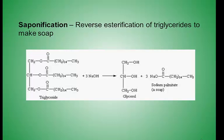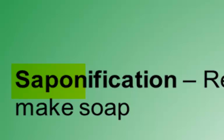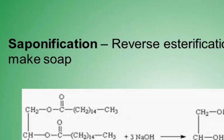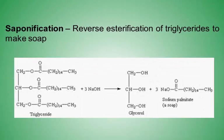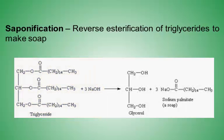Ordinary soap is related to fat. One process of making soap is saponification, which is the reverse reaction of the formation of a triglyceride — also called reverse esterification. A triglyceride reacts with three moles of sodium hydroxide, which break the ester bond, returning the glycerol molecule and forming the conjugate base of the fatty acid. The conjugate base forms because of the basic environment in which the reaction takes place, and it is this conjugate base of the fatty acid that is soap.